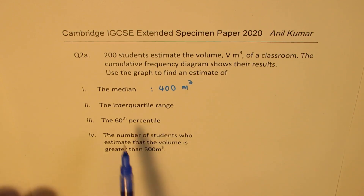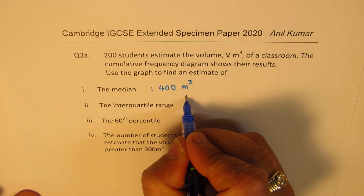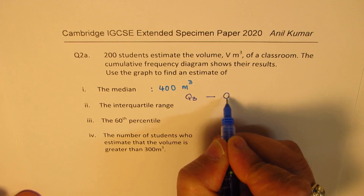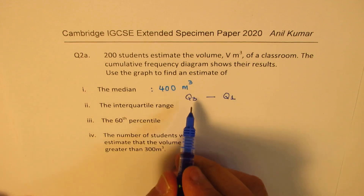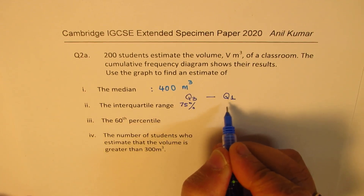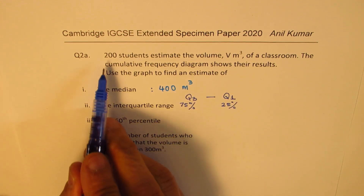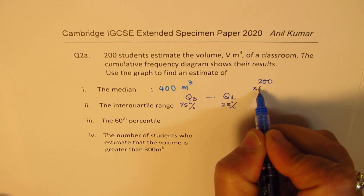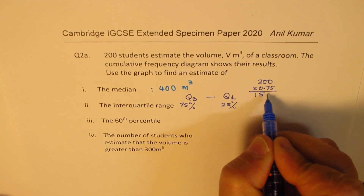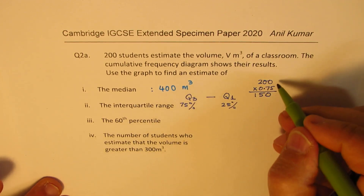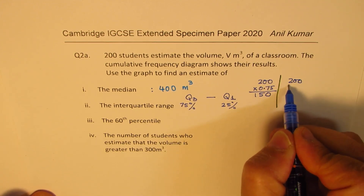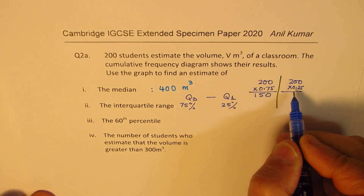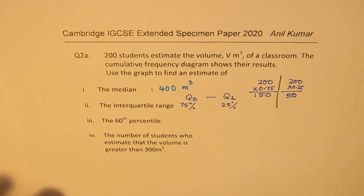When we talk about interquartile range, we need to find Q3 and subtract Q1. Q3 is 75% and Q1 is 25%. So 75% of 200 is 200 times 0.75, which is 150. And Q1 is 25% of 200 — 200 times 0.25 is 50. So we are looking for the values corresponding to 150 and 50 on the cumulative frequency graph. The difference between these two values will give us the interquartile range.